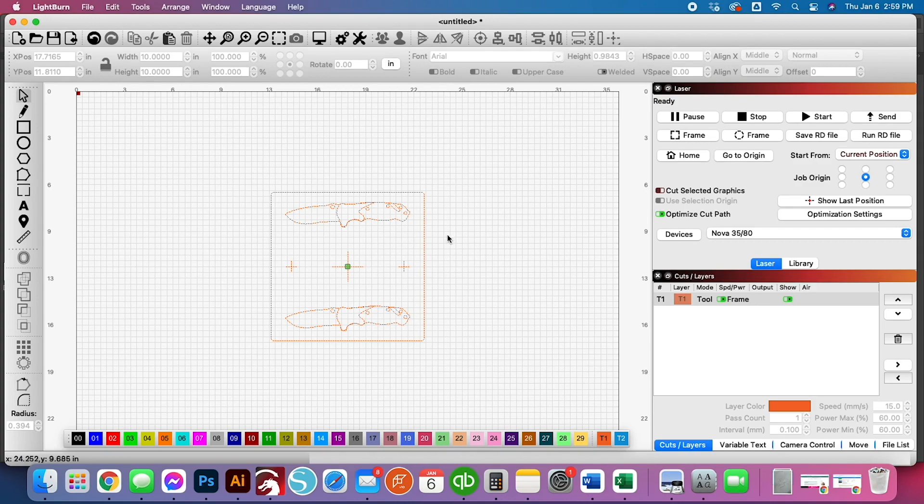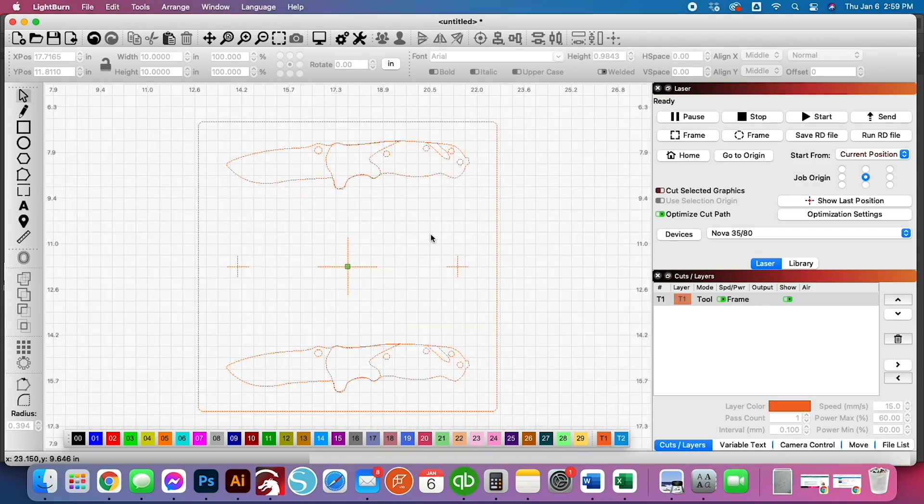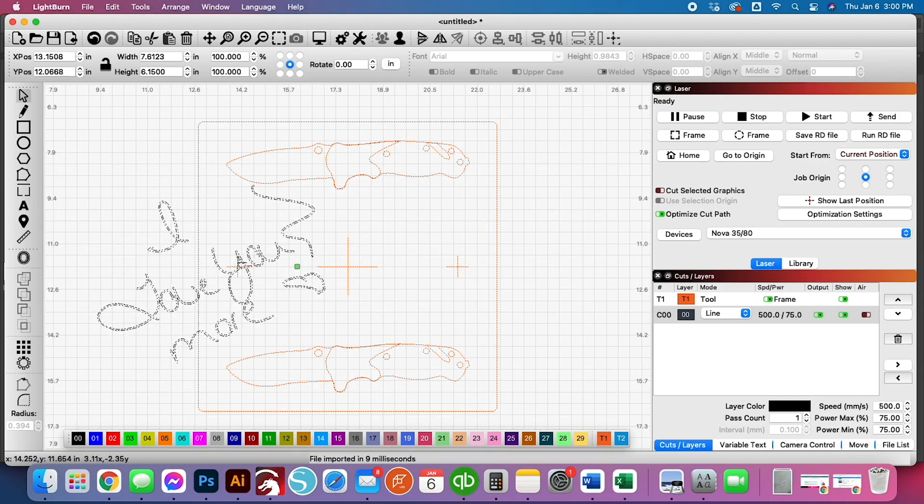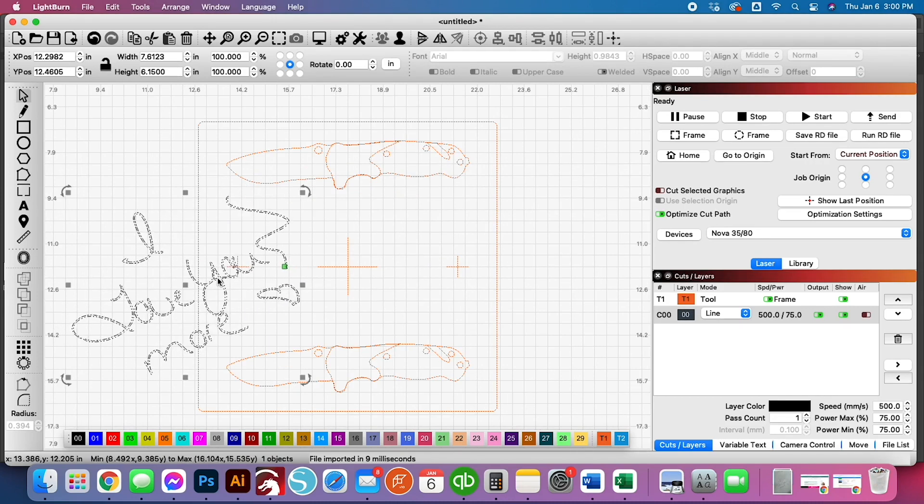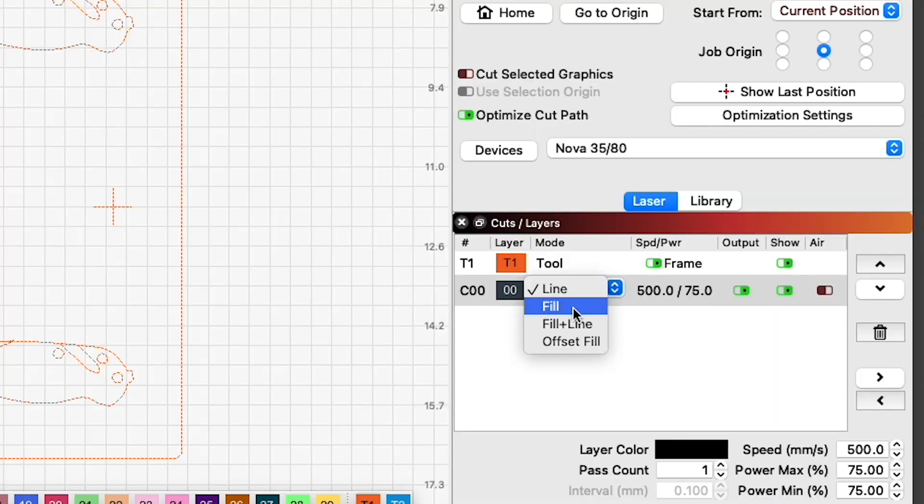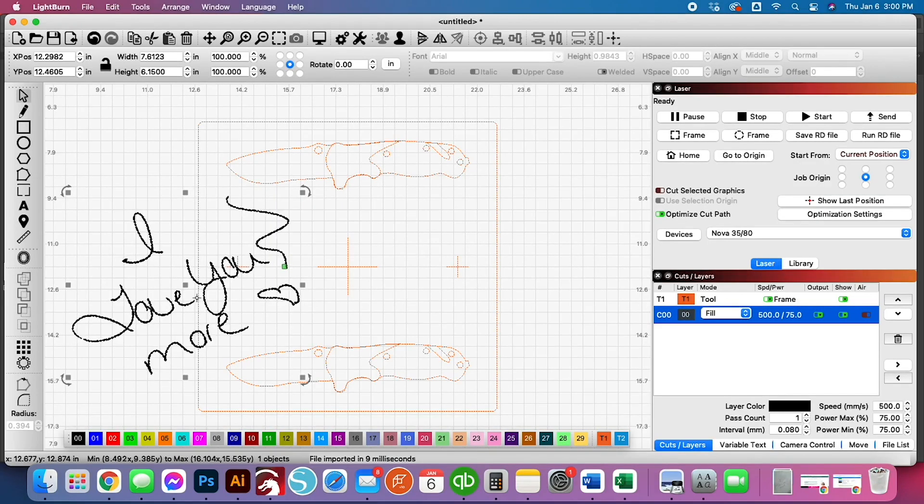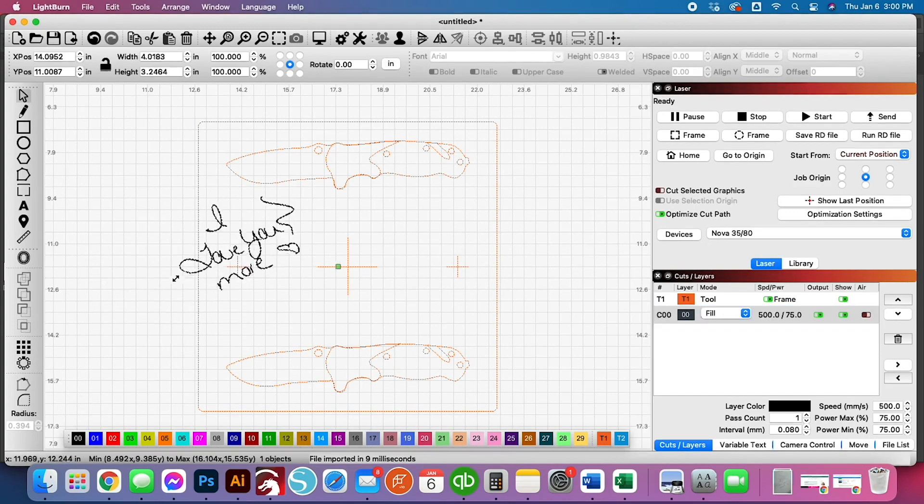Once we have that, all we have to do now is add our artwork. We're going to zoom in just a little bit. As you can see, we have our artwork imported here now. We want to make sure that we've set this to a fill because this is going to be engraved. We'll resize this. We're just going to grab the corner, resize it, and then position that on that knife.